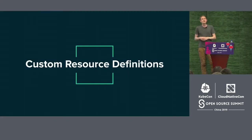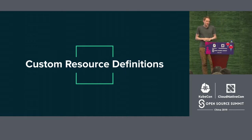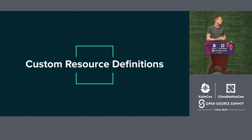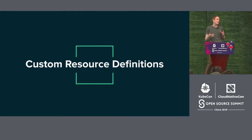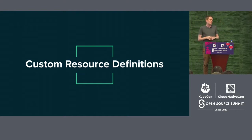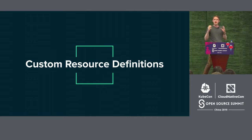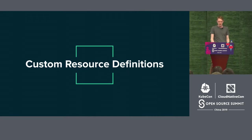So we have resources and controllers — how do custom resource definitions fit in? Custom resource definitions, or CRDs, allow users of the API to define their own custom resource types. Perhaps I don't want to create a pod or a deployment — I want to create something more exciting, like a piece of cake. CRDs let me create, update, and delete cake objects on my Kubernetes API. I can specify a kind of 'cake' with a spec saying I want a Victoria sponge, using the same tooling as any other resource.